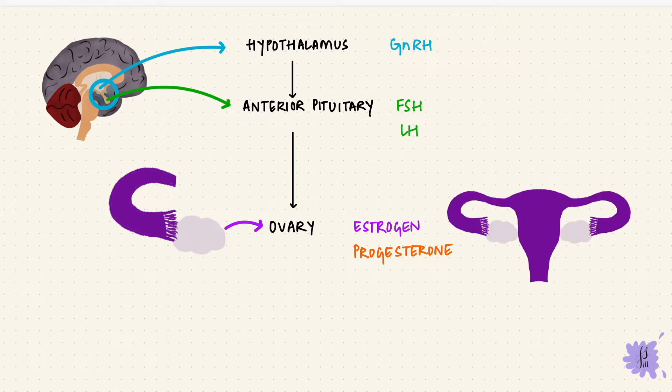But for now, we're going to look at the changes that happen in the endometrium under the influence of this estrogen and progesterone, creating an endometrial cycle.